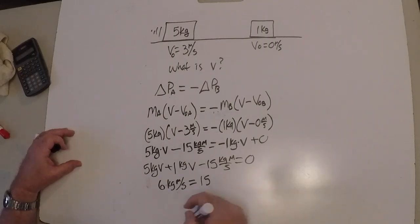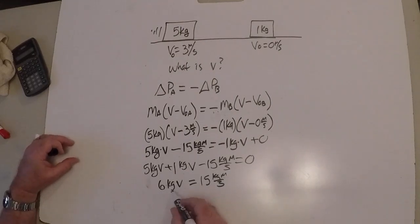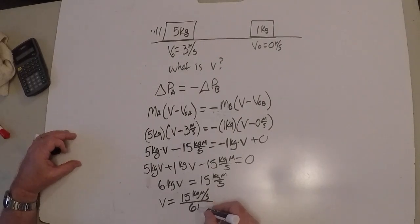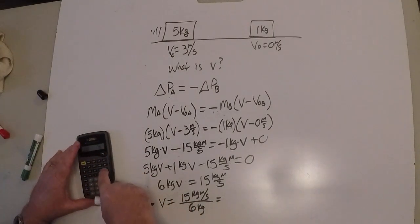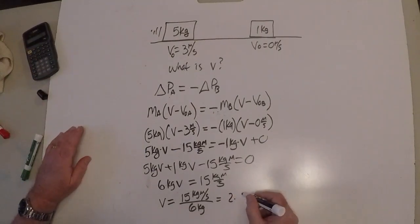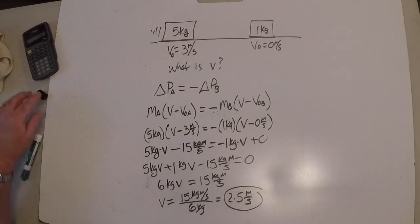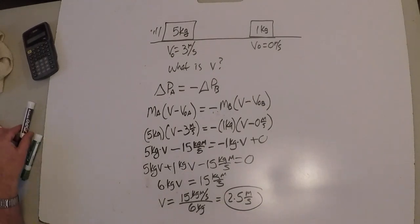Combining terms and adding 15 to both sides: 6 kilograms times V equals 15 kilogram·meters per second. To solve for V, divide both sides by 6 kilograms. So V equals 15 kilogram·meters per second divided by 6 kilograms. That gives 2.5 — and notice the kilograms divide out, leaving meters per second. So 2.5 meters per second is the velocity of the combined masses. That's a positive number, which tells us it's still moving to the right, which is what we would have expected.